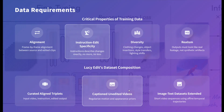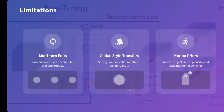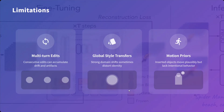What are the data requirements? Critical properties of training data include: alignment — frame by frame alignment between source and edited clips; instruction edit specificity — instructions describe changes exactly, no more no less, very precise instructions were given in the training data; and diversity — clothing change videos, object insertions, style transfer, etc. Limitations of LucyEdit: multi-turn edits can accumulate drift and artifacts; global style transfer — strong domain shifts sometimes distort identity and motion priors; and inserted objects move plausibly but lack intentional behavior.